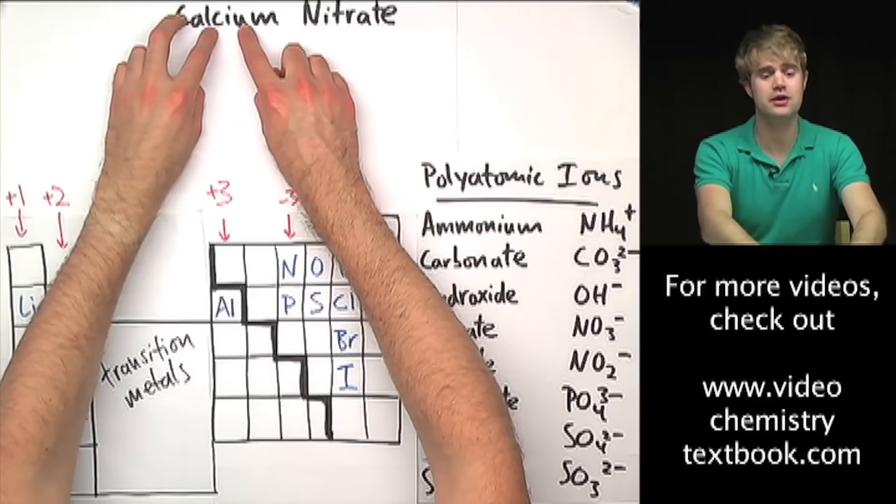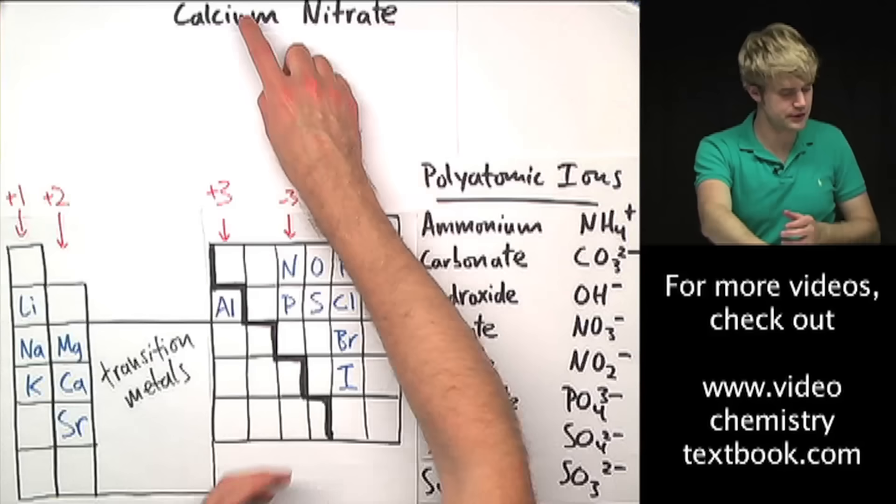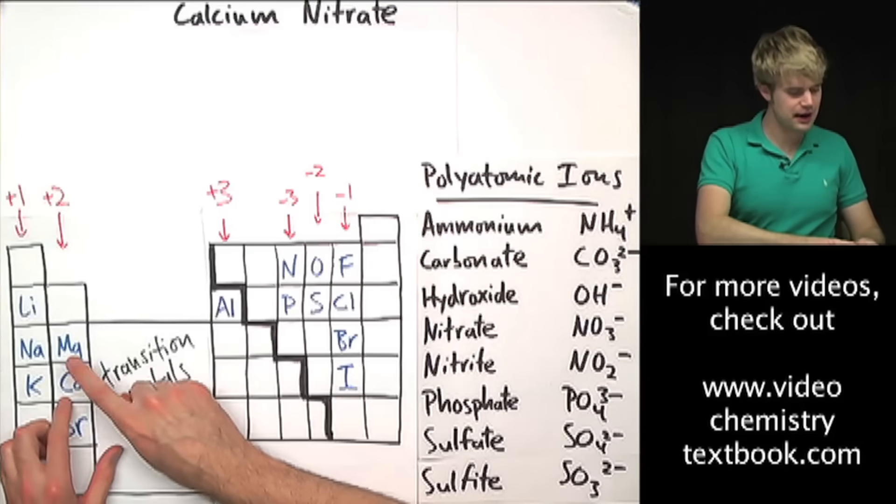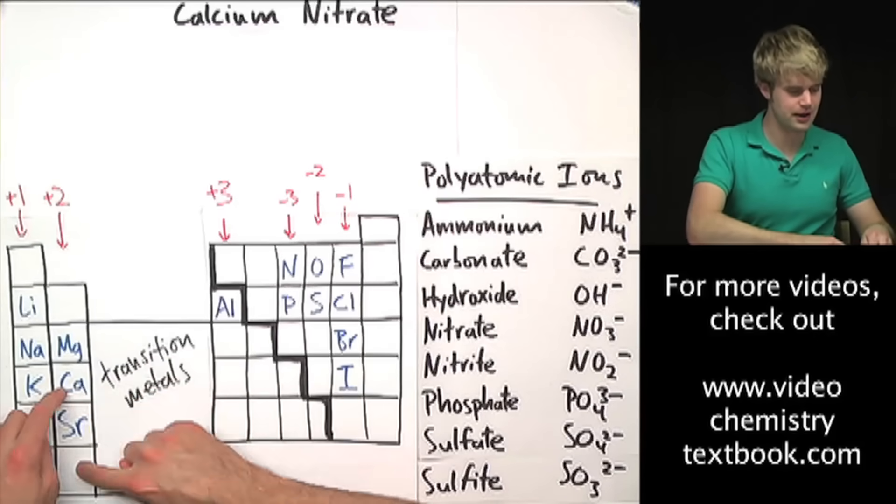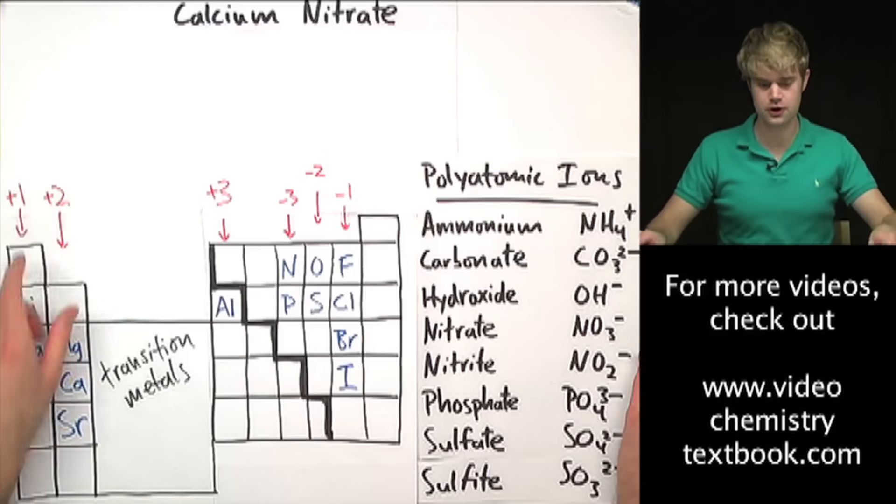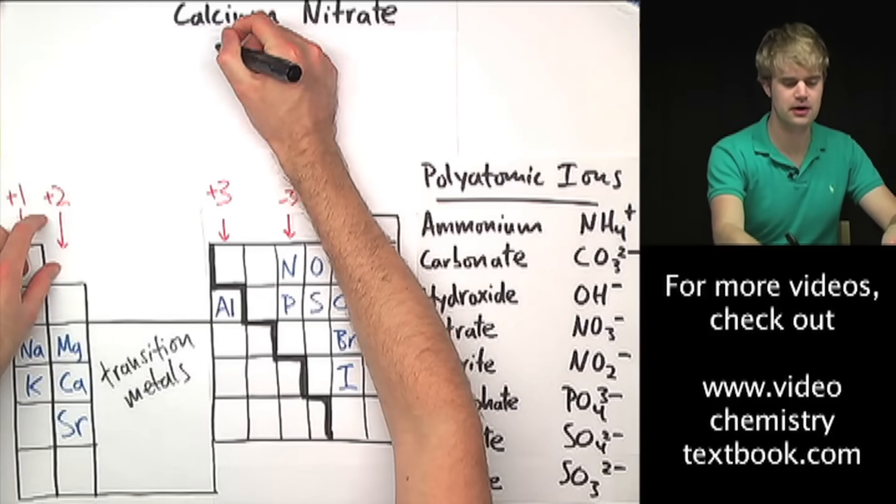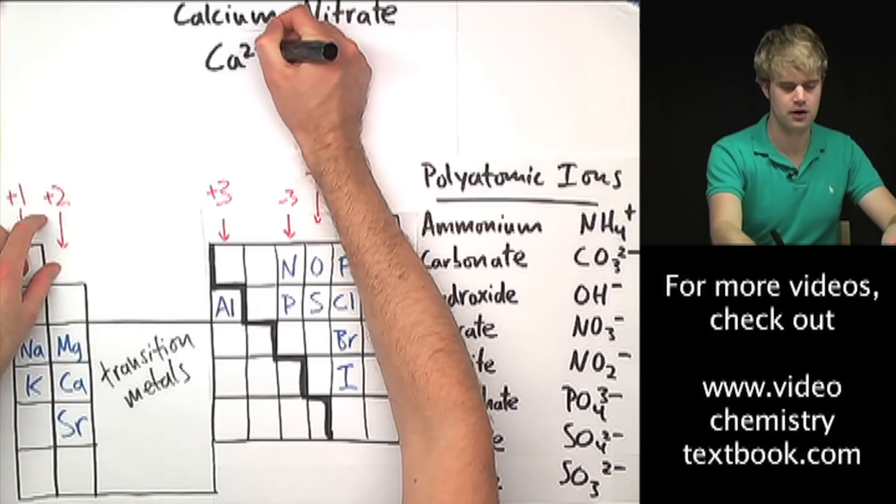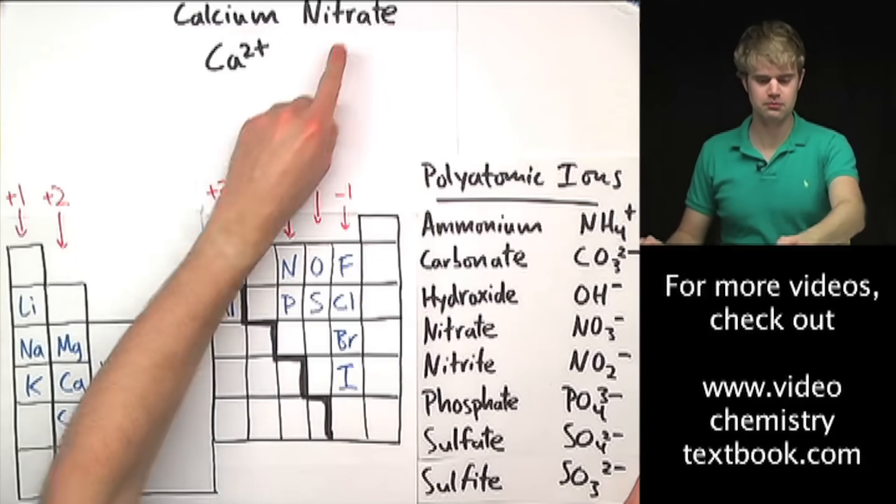Let's start with calcium. What's the charge on calcium? That's pretty easy. Calcium is right here on the periodic table in this column. Everything in this column has a 2+ charge. So I'm going to write this right up here: Ca 2+.